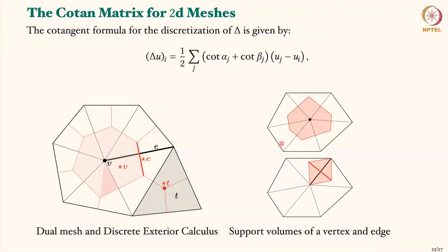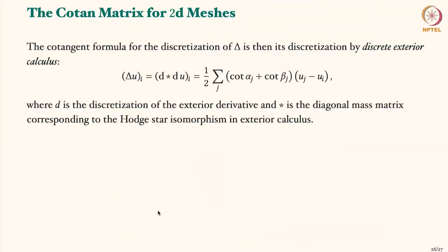You extend graph duals to meshes and you have the Voronoi region, which is the dual of a Delaunay triangulation. You have both primal and dual meshes, and you do some discretizations. This cotangent formula pops up more readily as a geometric formula if you use the discretization of the Laplacian in discrete exterior calculus. I'm not going to try and explain each of these terms — these require some higher geometry to be studied.